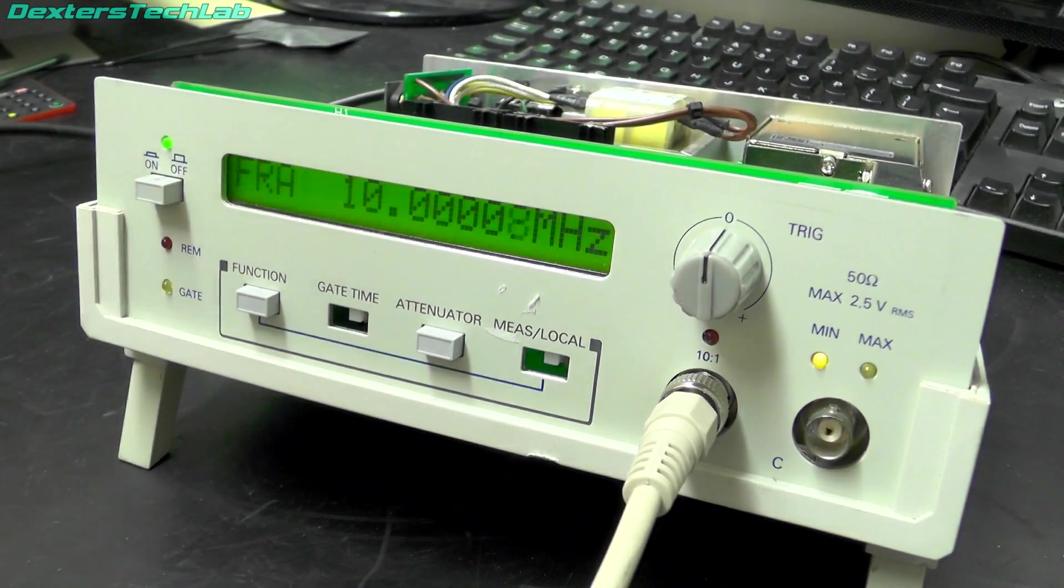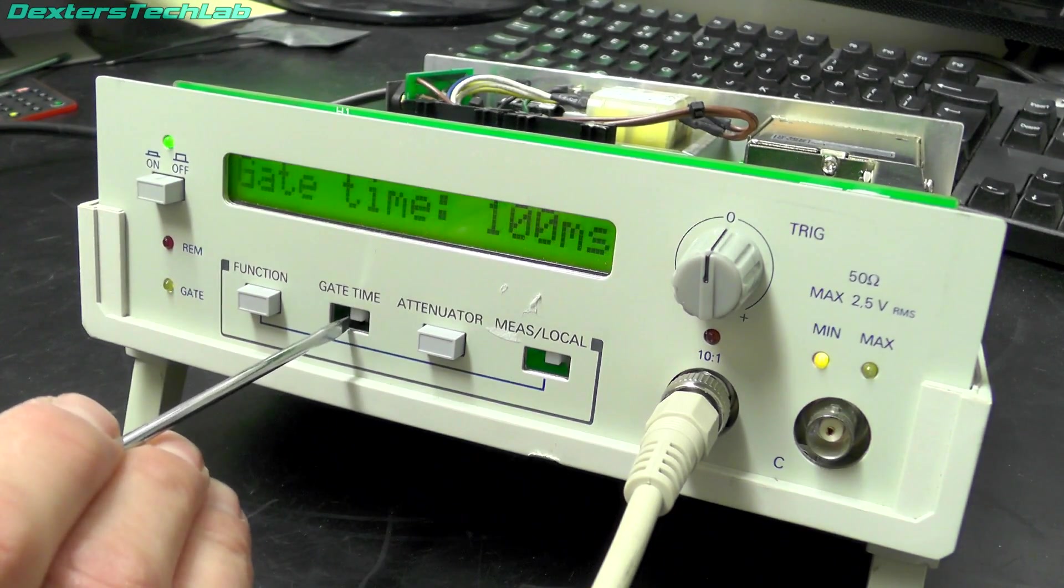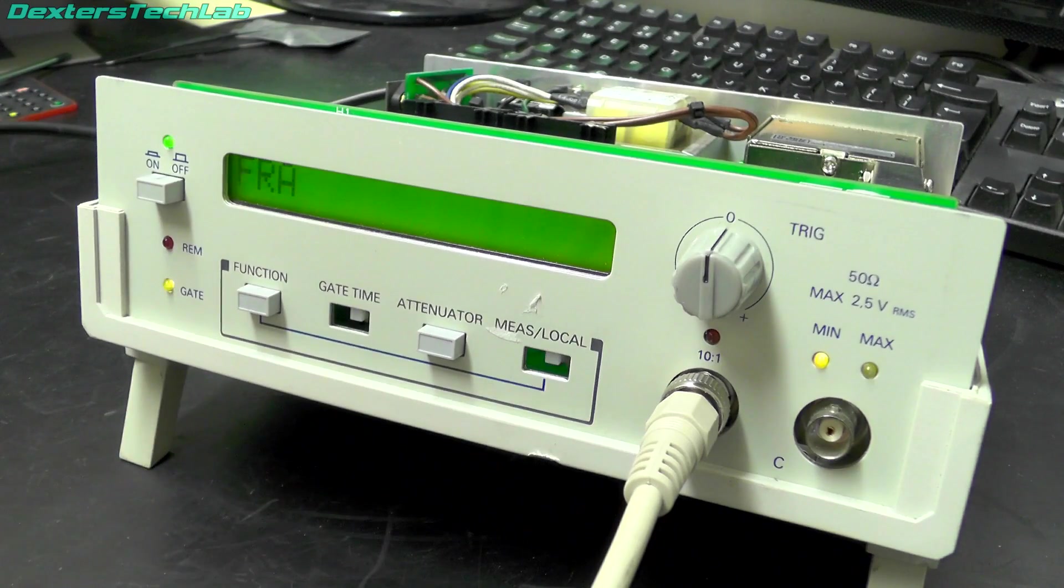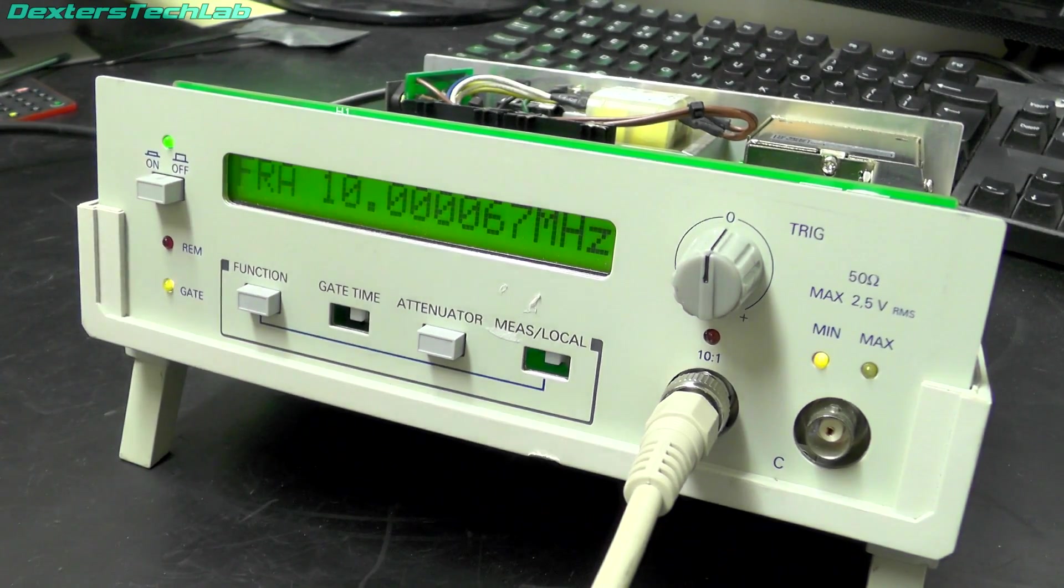So if we get an extra decimal place by increasing the gate time. It's looking pretty good. Everything seems to work properly.